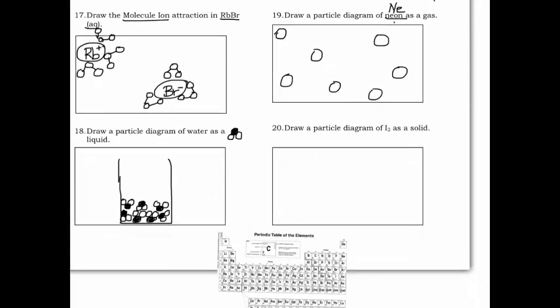The last one: draw I2 as a solid. You'll have two atoms of the same size and shape — if you color one, color the other since they're both the same element. Since it's a solid, it has its own defined shape. Draw at least six molecules of I2 stacked up in an orderly arrangement to show it has its own shape. That's how you draw iodine I2 as a solid, and that's the end of the quiz.